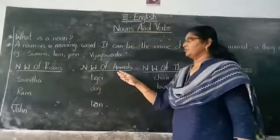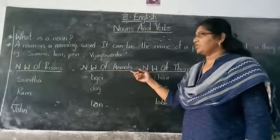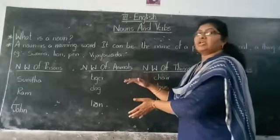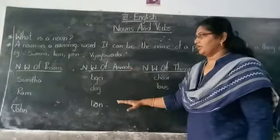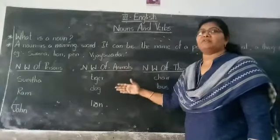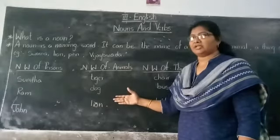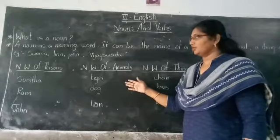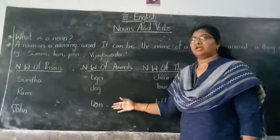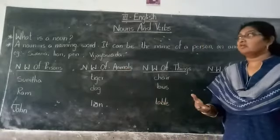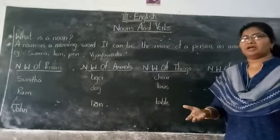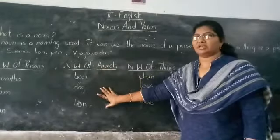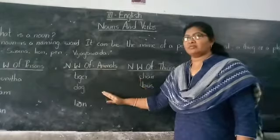Coming to naming word of animals — all animal and bird names fall in this category. In nouns, we call birds animals too. We include wild animals, domestic animals, and pet animals. Examples: tiger, dog, lion, giraffe, zebra, cat, parrot, peacock — all these names come into the naming word of animals category.